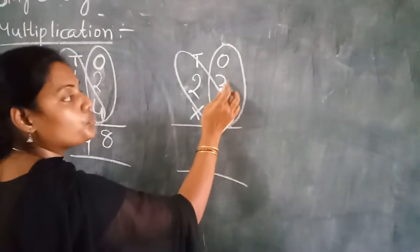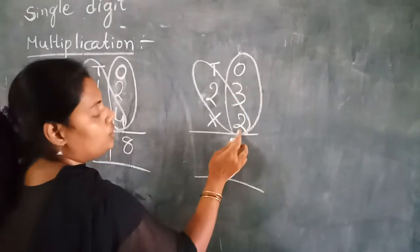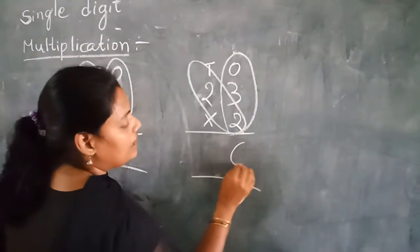First of all, multiply with 1's place. 2 times 3 are how much? 2 times 1 are 2, 2 times 2 are 4, 2 times 3 are 6.